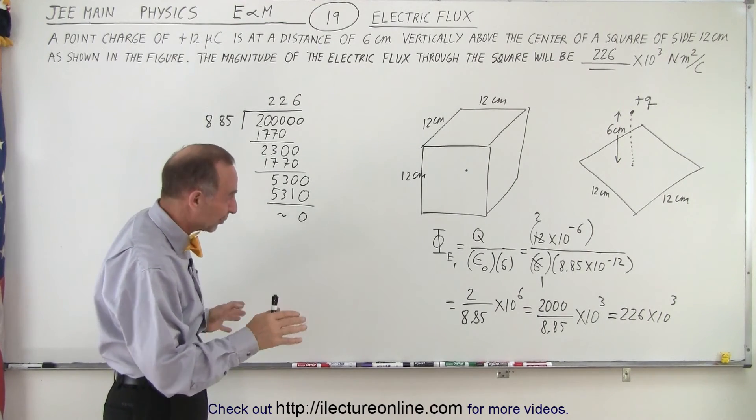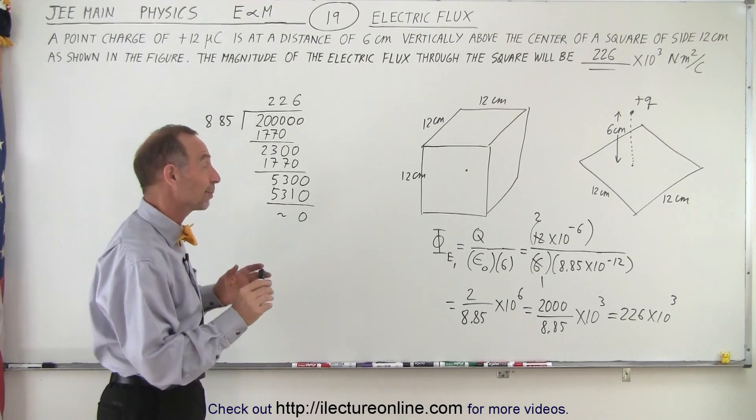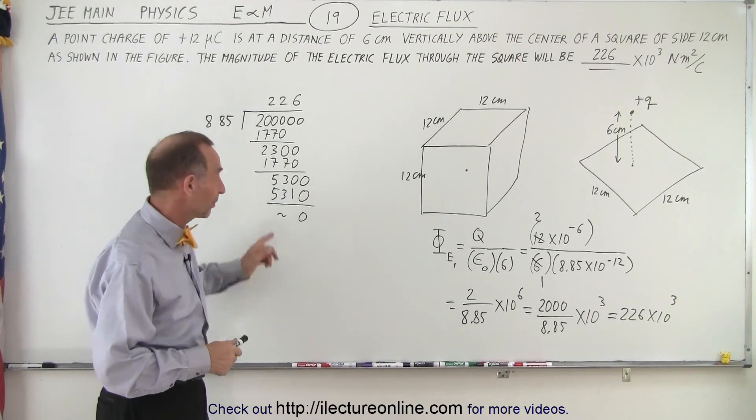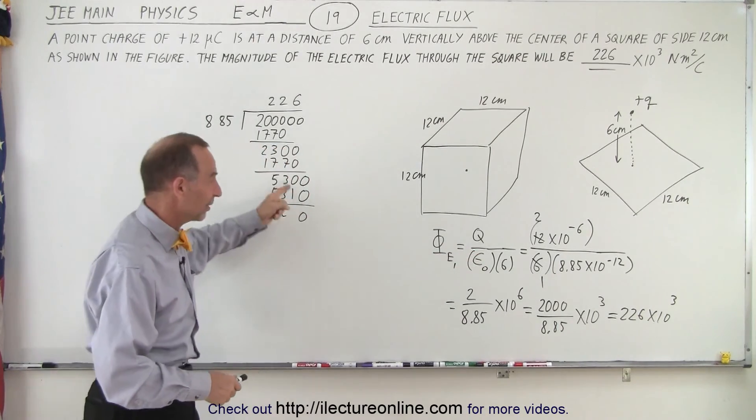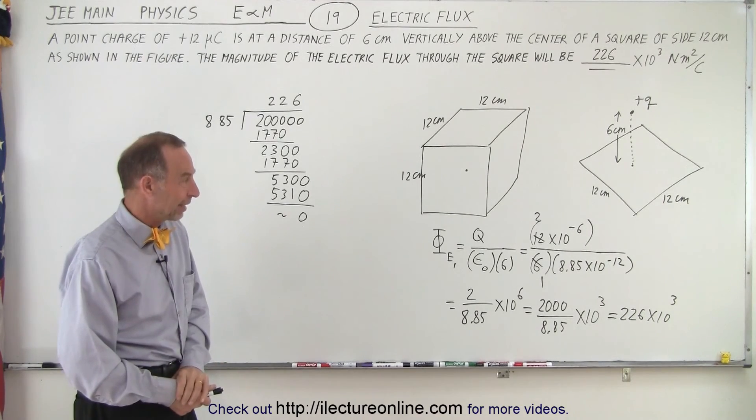When you say 226, you sit there and go, did I do something right? Did I do something wrong? I'm not quite sure if that's the correct answer. But it turns out that was the correct answer. It is fairly simplistic, but you can easily make an error in the arithmetic calculations. You've got to be careful there.